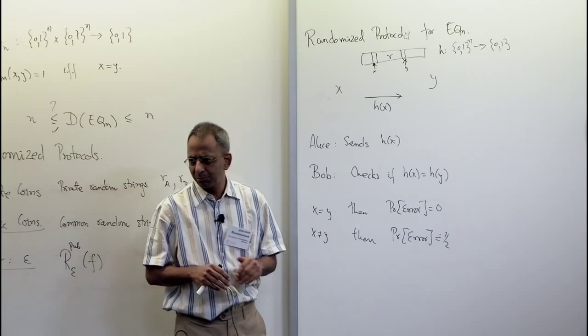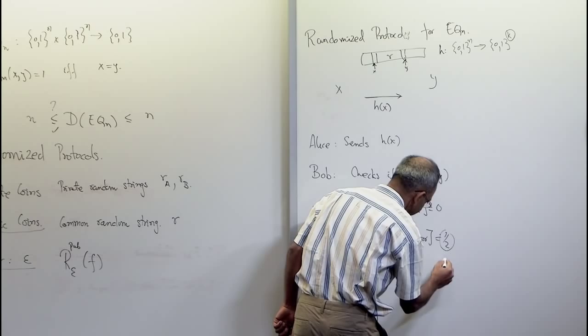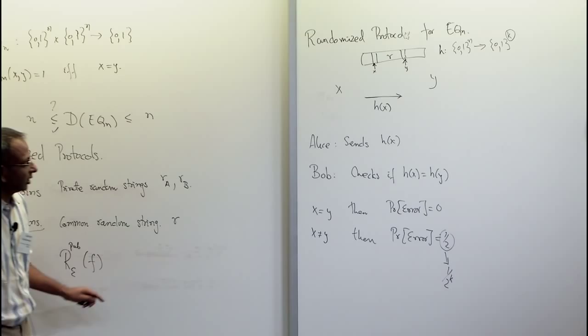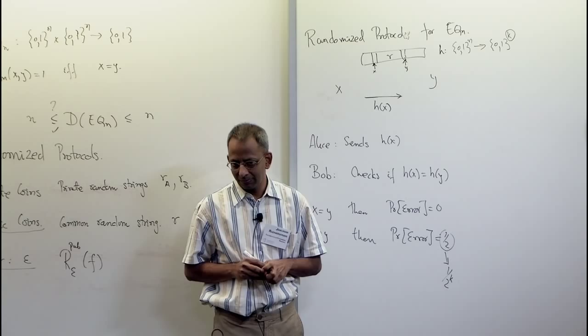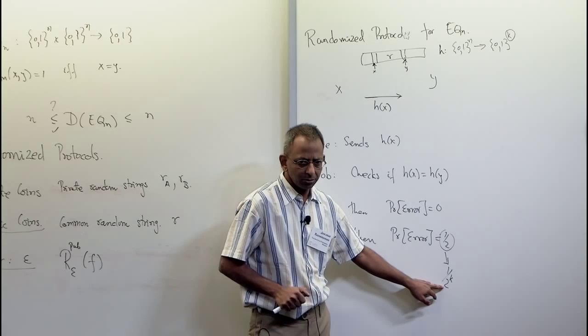If you want this probability of error to be smaller, you can just replace the output space from {0,1} to {0,1}^k, and the error goes down to 1/2^k. So with constant amount of communication in the public coins model, we can bring down the error to any small constant.